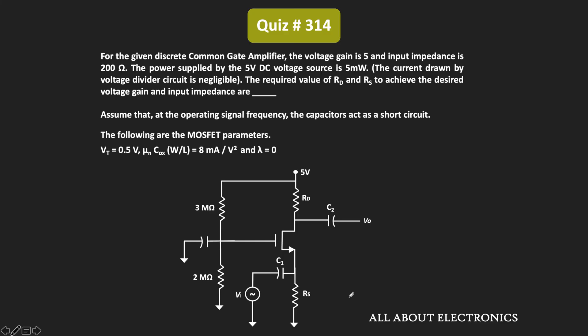Welcome to the YouTube channel all about electronics. In this question we have been given a common gate amplifier with a voltage gain of 5 and an input impedance of 200 ohms. We have also been given that the power supplied by the 5-volt voltage source is equal to 5 milliwatts, and the current drawn by the voltage divider circuit is negligible — meaning the entire current is drawn by the MOSFET. We need to find the required values of RD and RS.